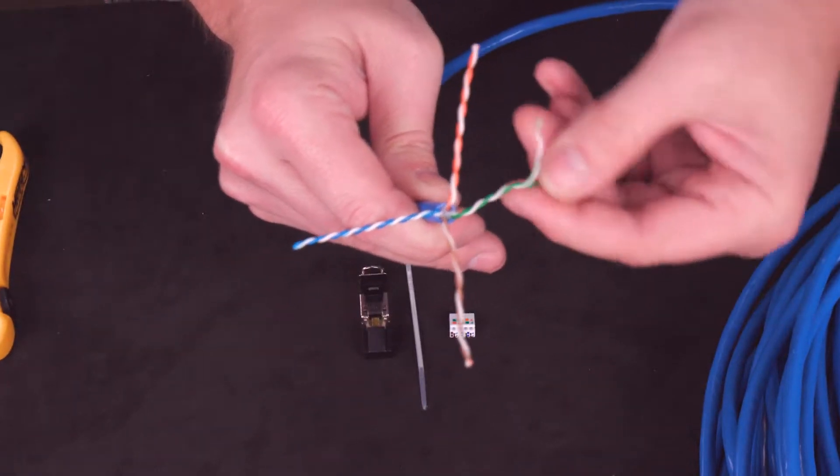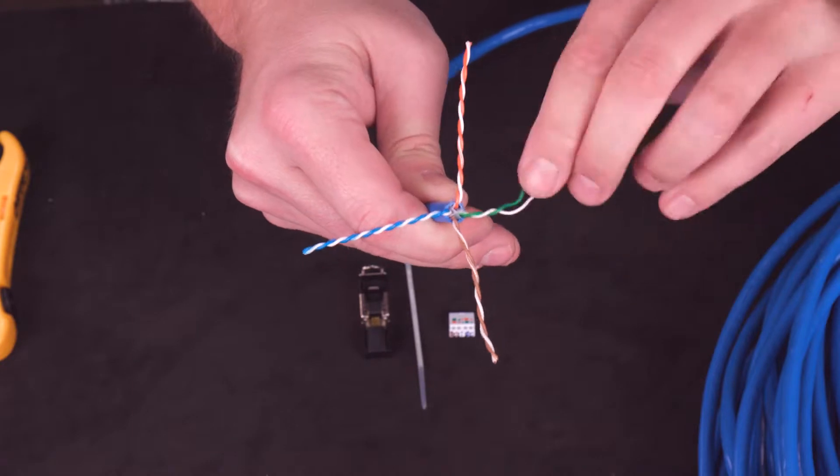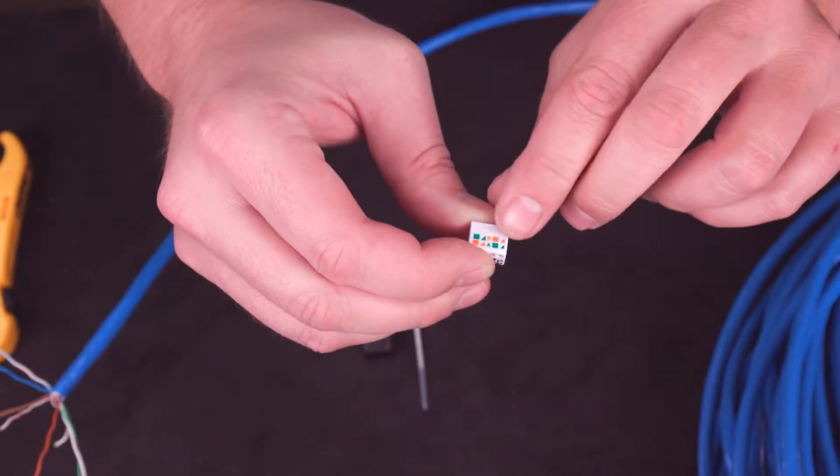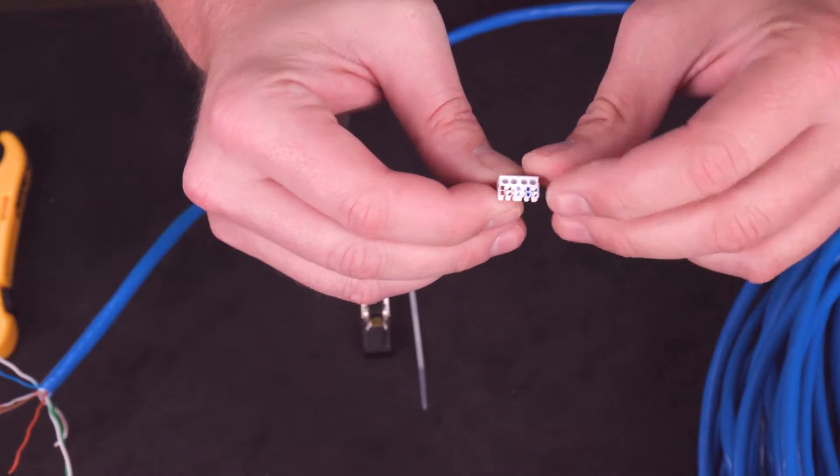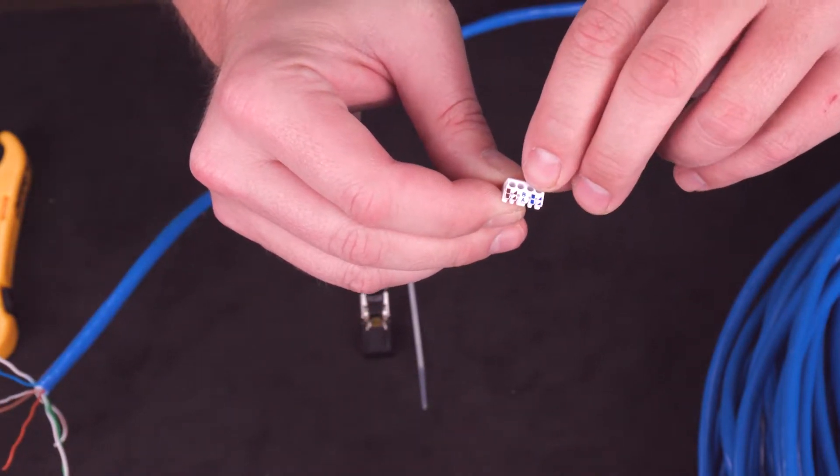Unravel each of the pairs, making sure it's fully unwound and there's no kinks. By this point, you should have selected whether or not you're doing 568A or B. Note that on the insert, the color codes match each of those.